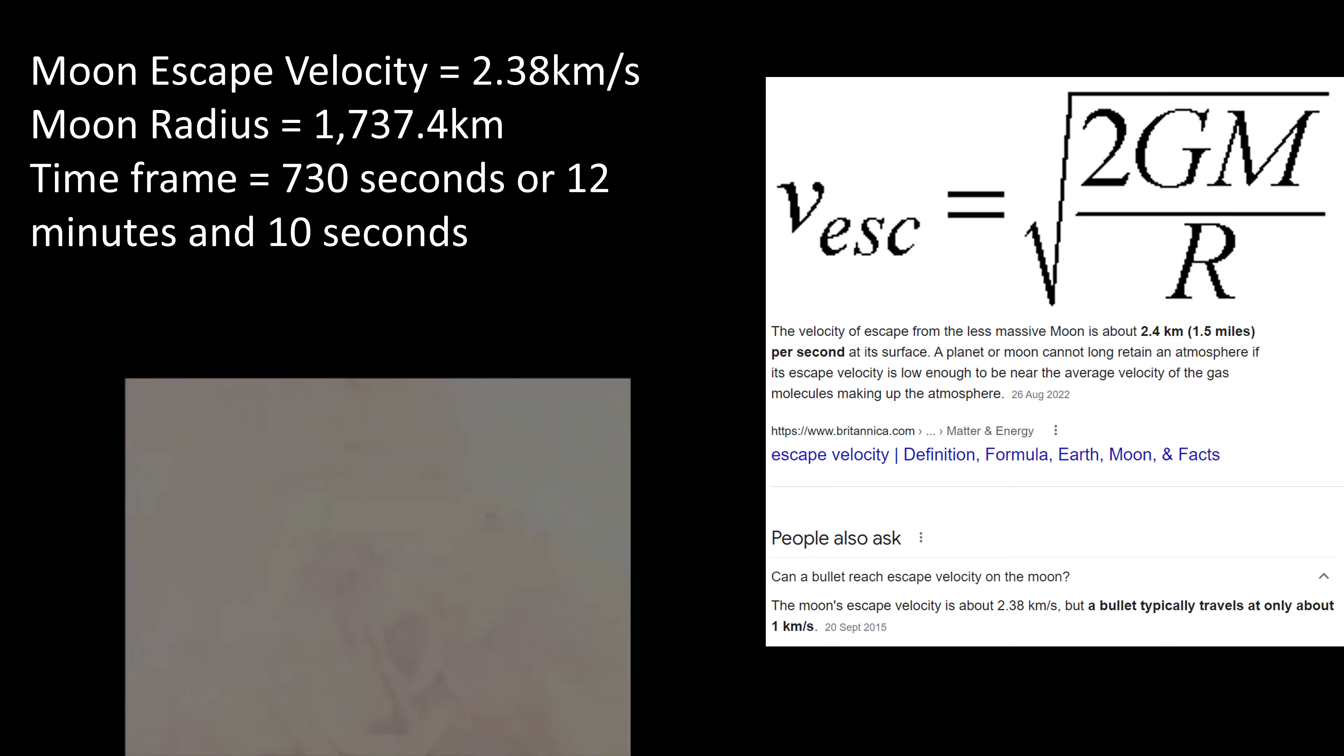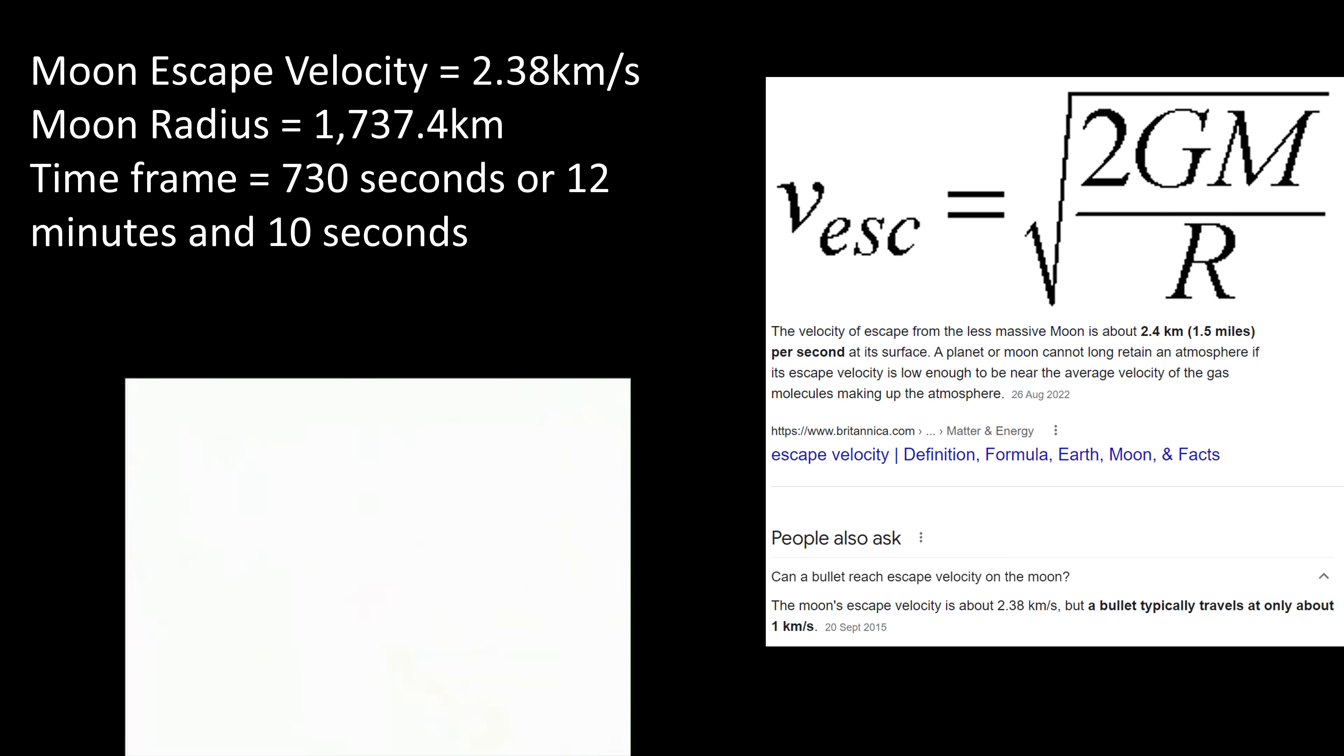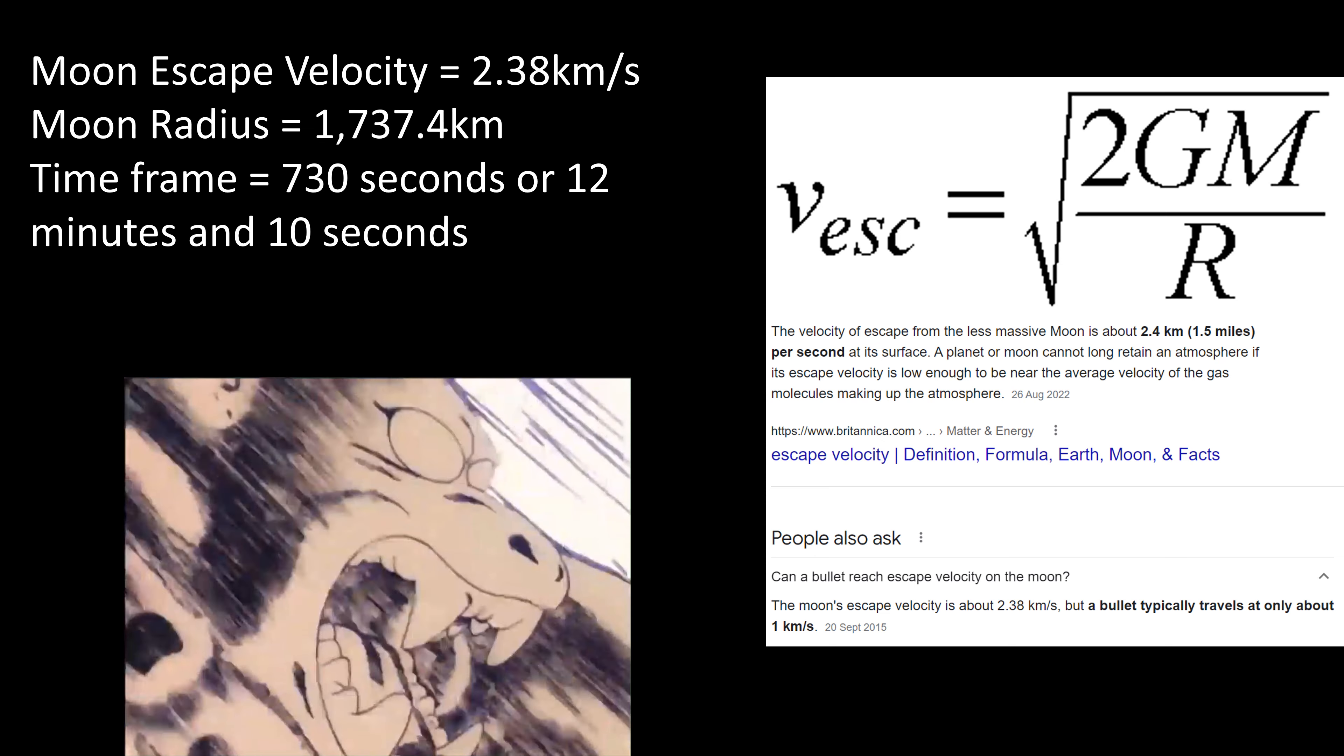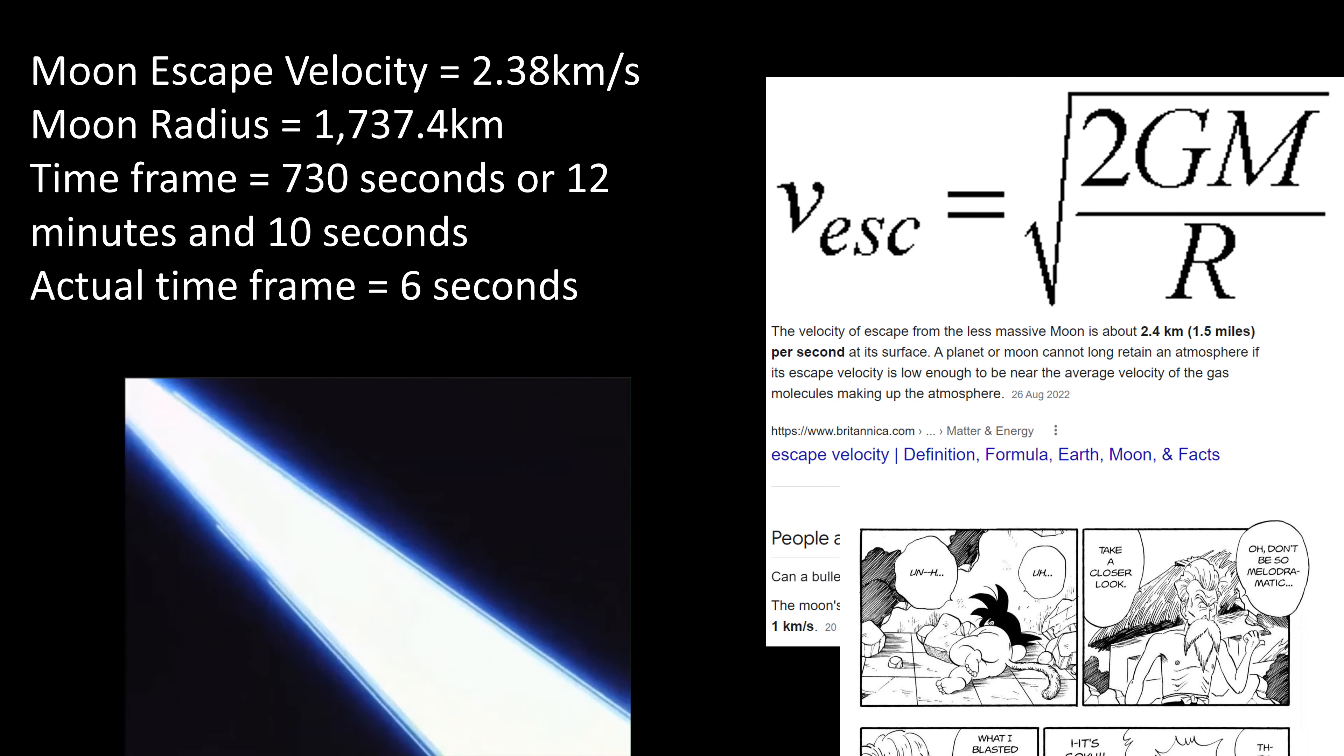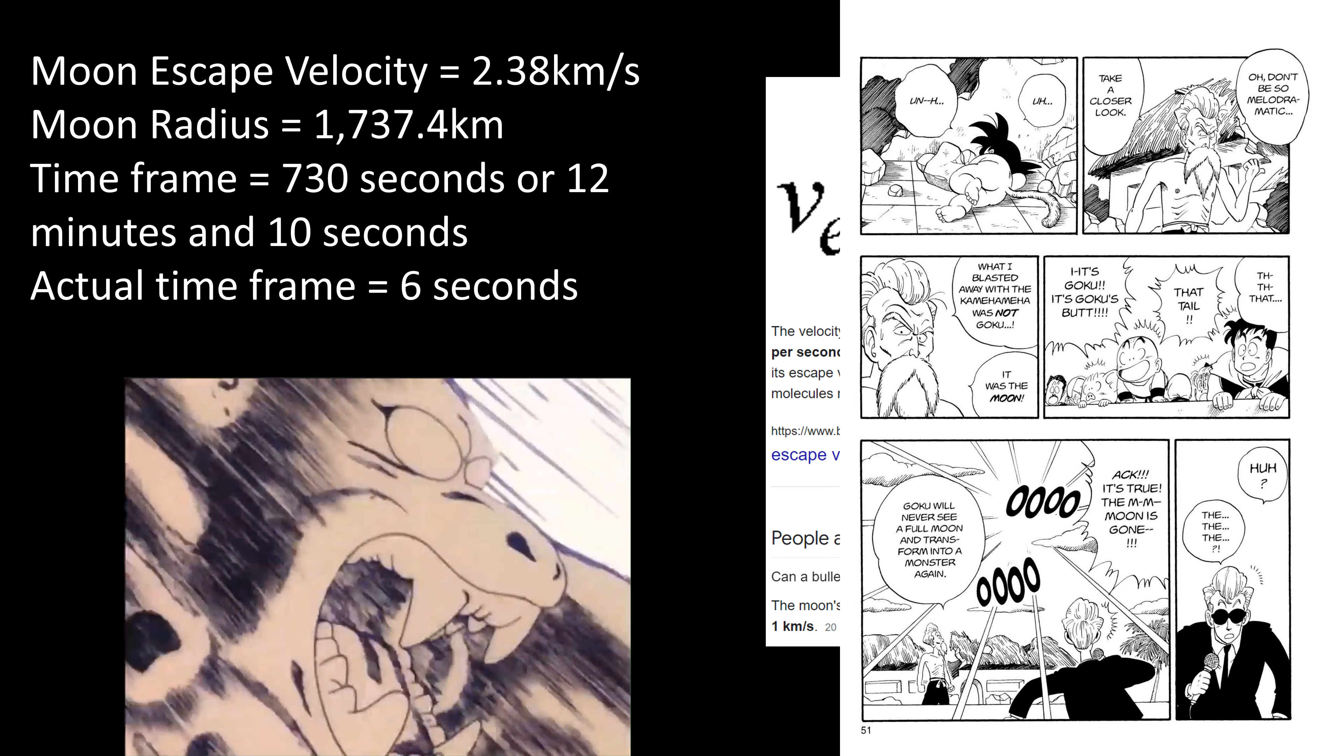Now, if you've seen the anime, you know that the actual time frame for Master Roshi destroying the moon is only about 6 seconds. And even if you haven't seen the anime, I think we all can agree that Master Roshi is not taking 12 minutes and 10 seconds to destroy the moon. In fact, it's happening so fast people didn't even notice it at first.